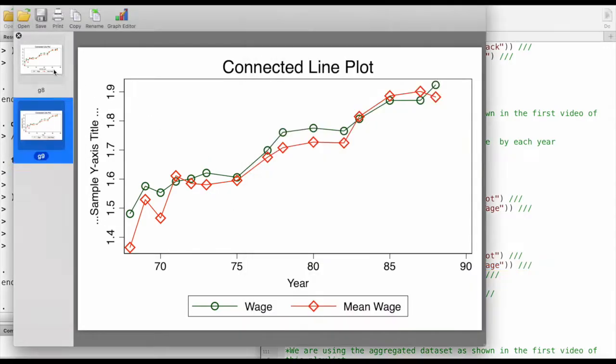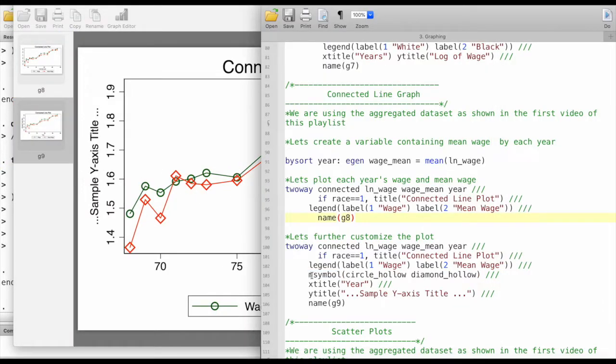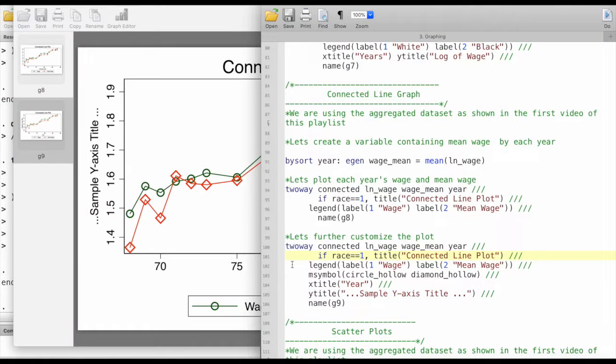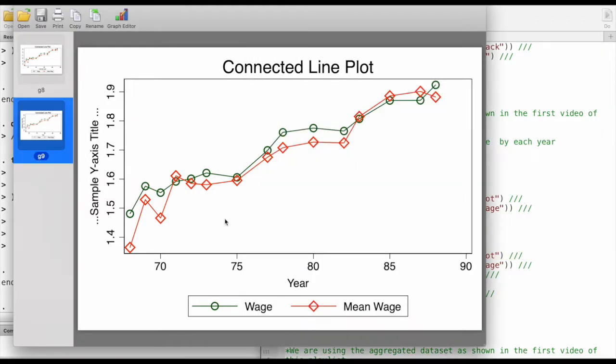Instead of using the default marker symbols, we are specifying that we'd like to use circle hollow and diamond hollow. Then we are giving an x-title which we didn't give previously and a y-title, so we can give any y-title we need in our graph. This is how we get this pretty neat connected line plot.